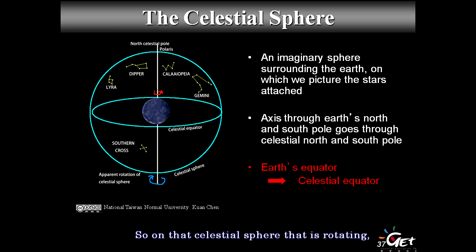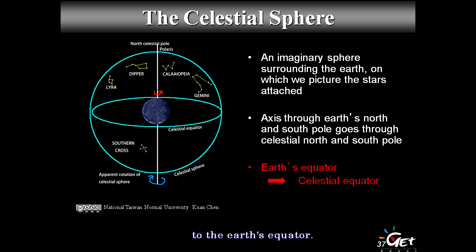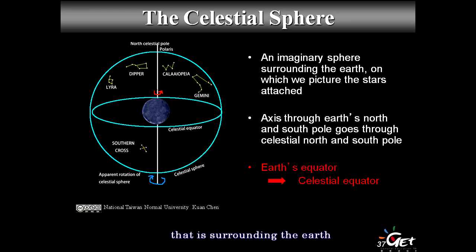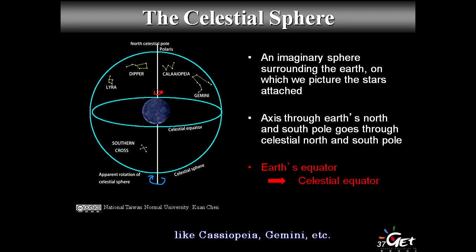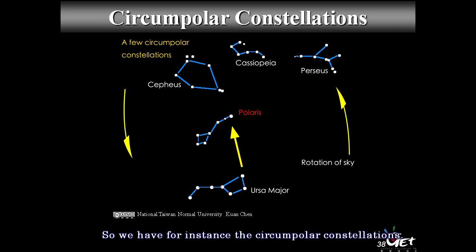On that rotating celestial sphere we have a north pole and a south pole. The celestial equator corresponds to Earth's equator; the north and south celestial poles correspond to Earth's rotation axis. This imaginary sphere surrounds the Earth, and on it you can draw all the constellations. We have circumpolar constellations — Polaris indicates the north pole, and several constellations like Ursa Minor, Ursa Major, Perseus, Cassiopeia rotate around Polaris at the same rate that Earth turns on its axis.